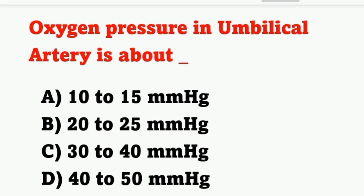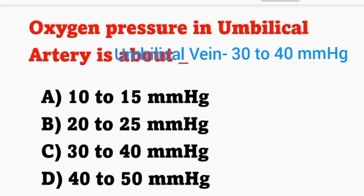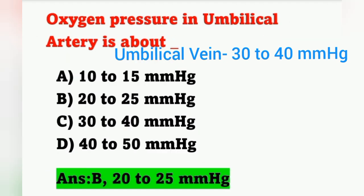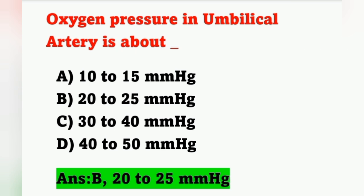The first question: oxygen pressure in the umbilical artery. Options — A: 10 to 15 mmHg, B: 20 to 25 mmHg, C: 30 to 40 mmHg, D: 40 to 50 mmHg. The partial pressure of oxygen in umbilical arteries is 20 to 25 mmHg — option B is the correct answer. In the umbilical vein it is 30 to 40 mmHg.